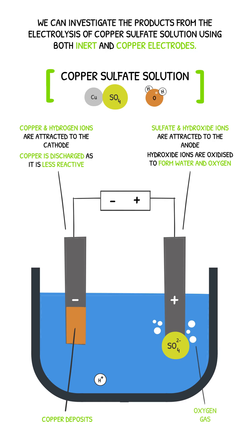Bubbles will begin to form as the oxygen gas is discharged at the anode. The sulfate ions remain in solution and the blue colour of the copper sulfate solution fades as the copper ions are removed from the solution.